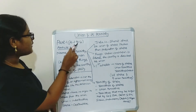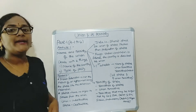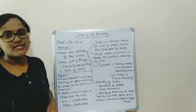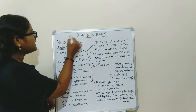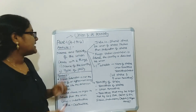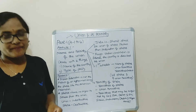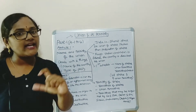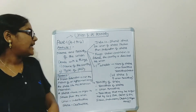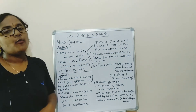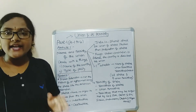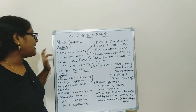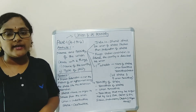Articles 1 to 4 in Part 1 of our Indian Constitution deal with the union and its territory. I will discuss each and every article in detail. Coming to Article 1 — Article 1 is all about the name and territory of the union.